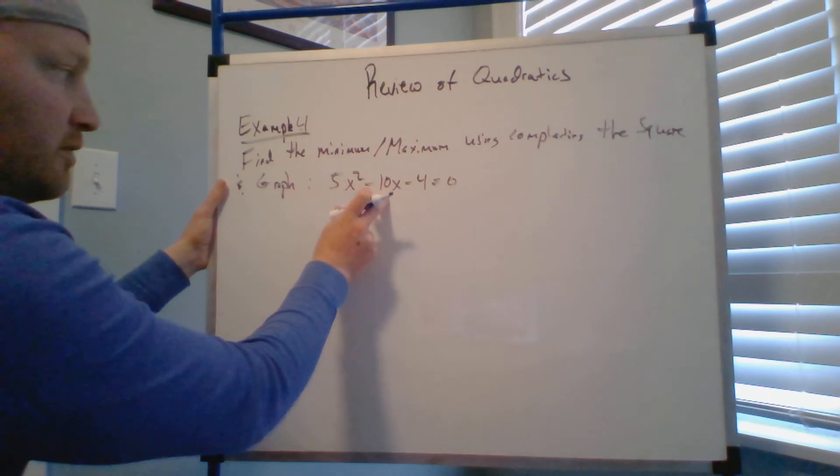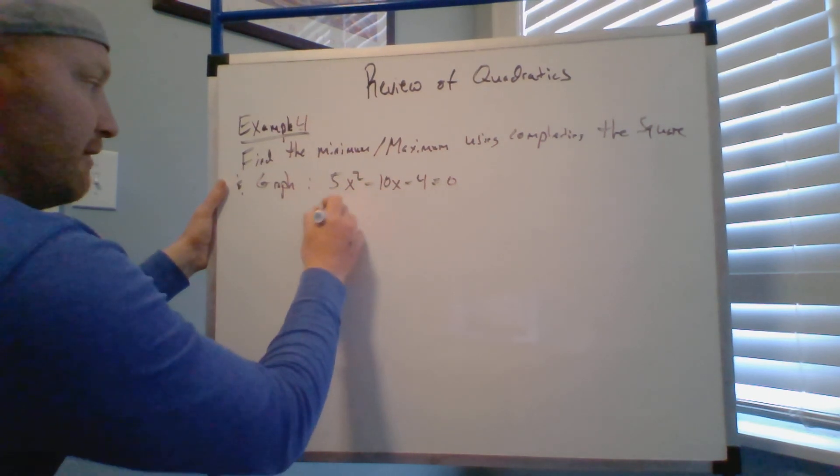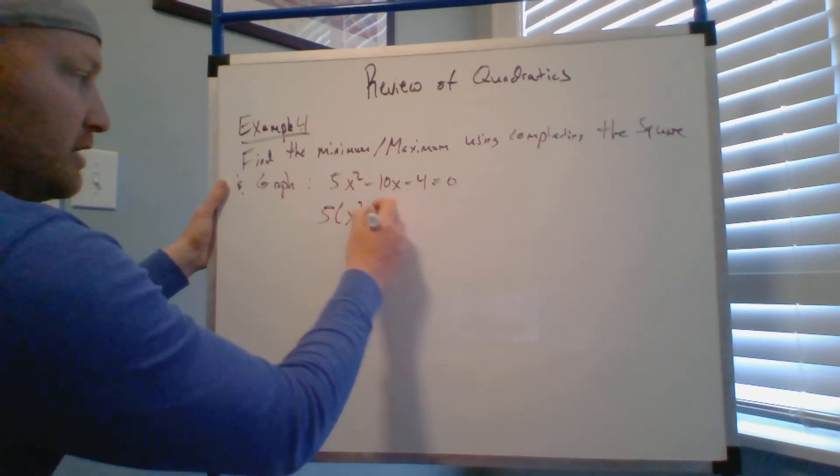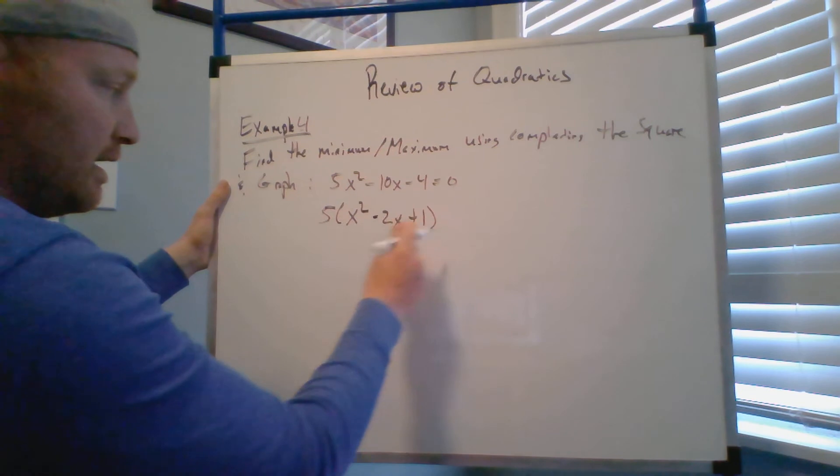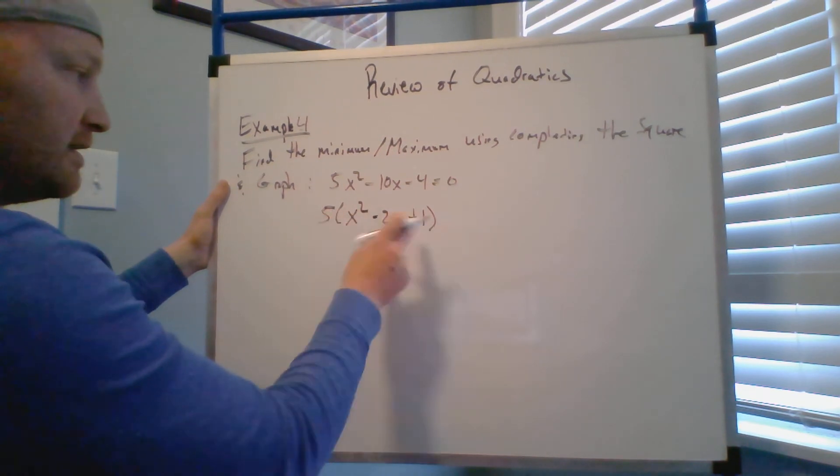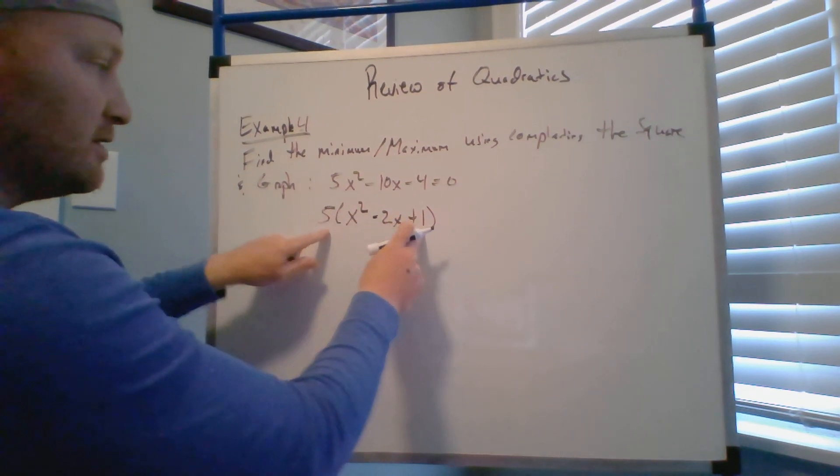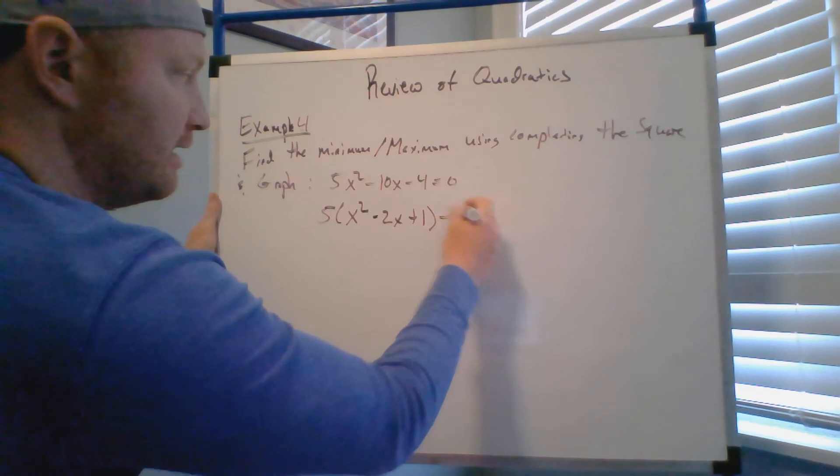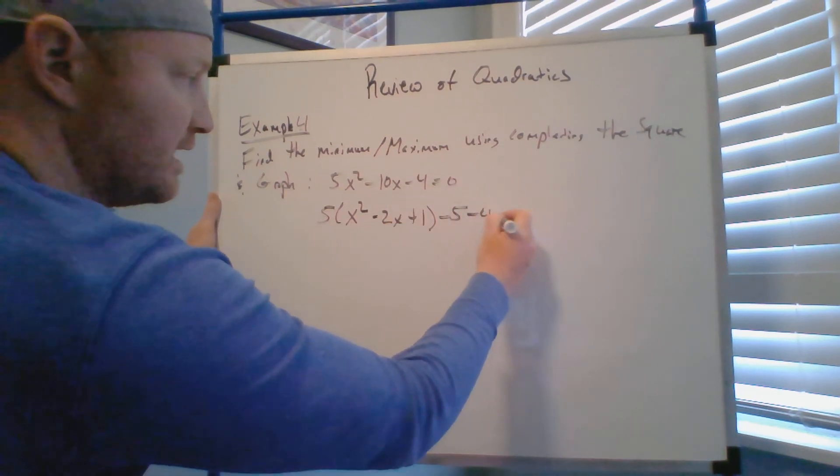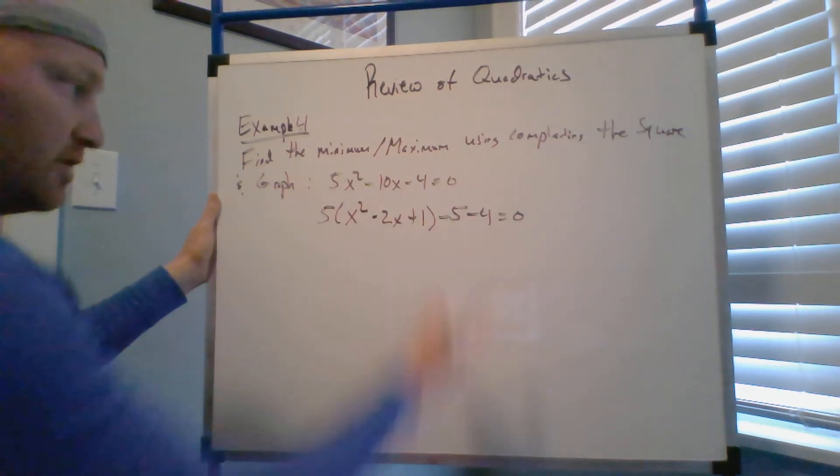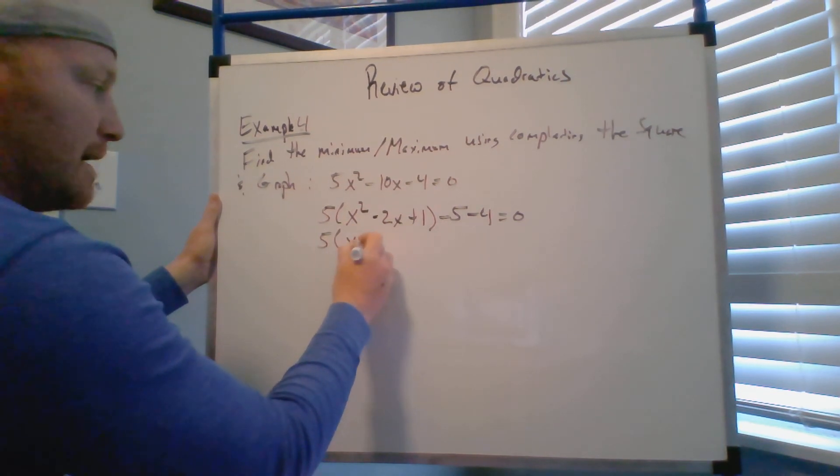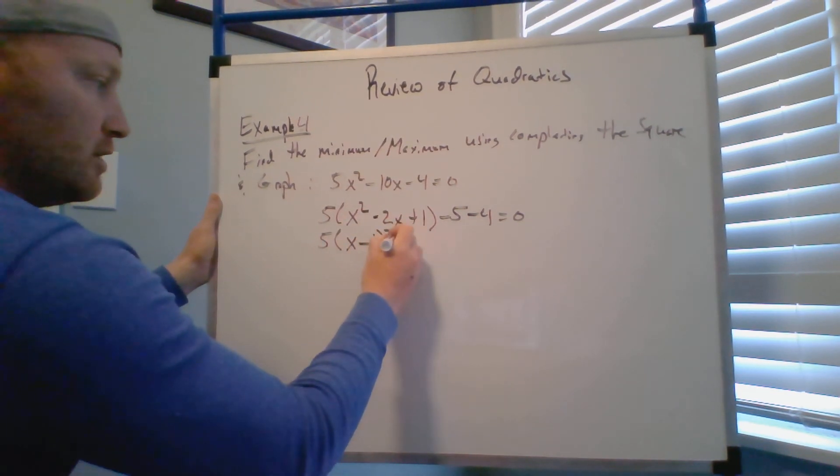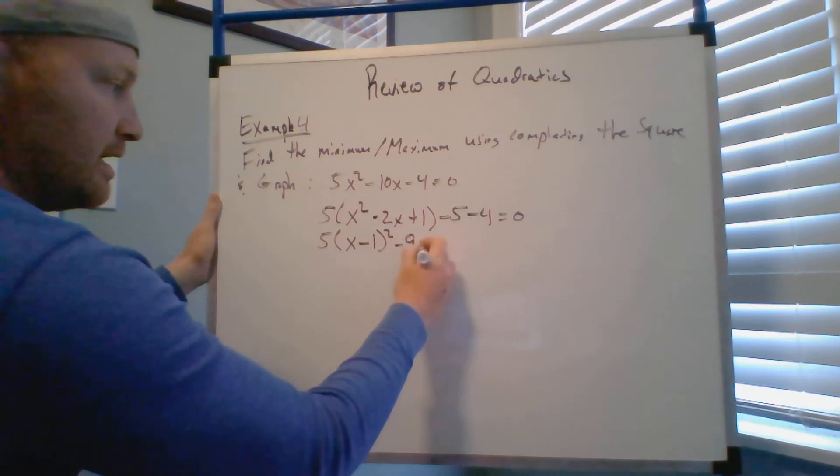So first things first, I gotta divide out the five of these first two terms and then create the parentheses. So I got five, I get x squared minus 2x. Half of this is negative one, square that and that is positive one. I then multiply this by this, I brought in a positive five that wasn't there. I take out a negative five and this stays on the outside like such. So now when I go one step further, this is now five times x minus one squared minus nine equals zero.